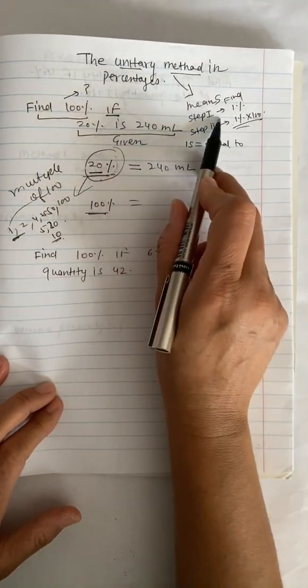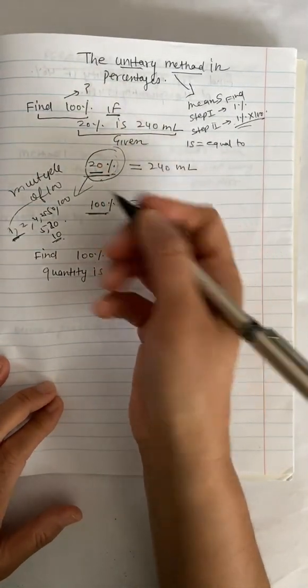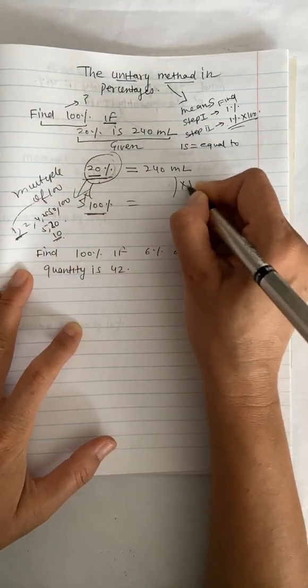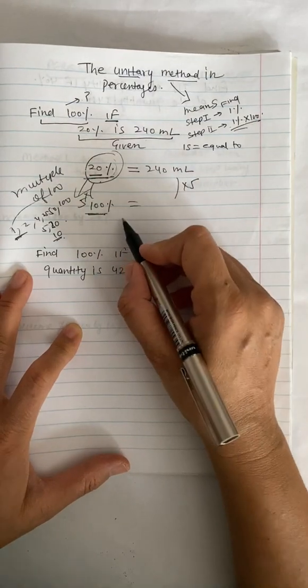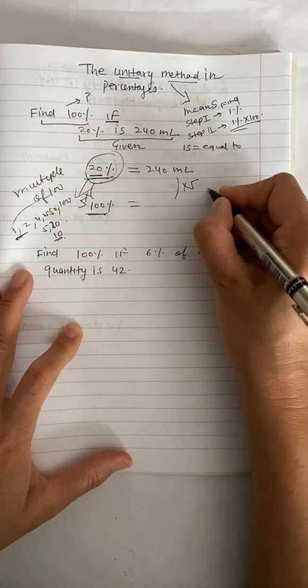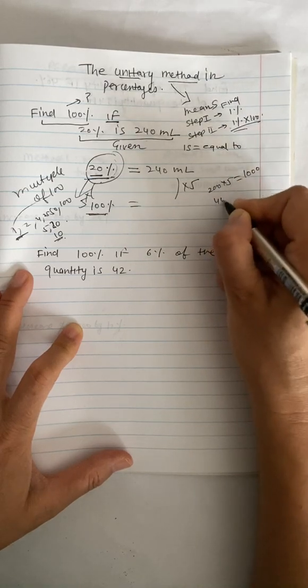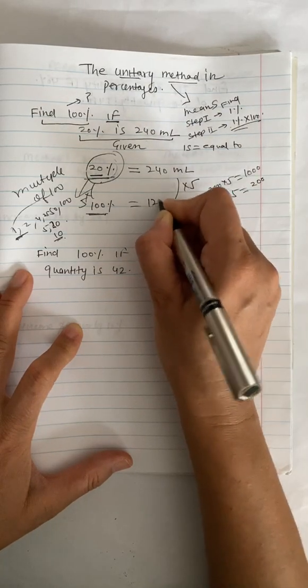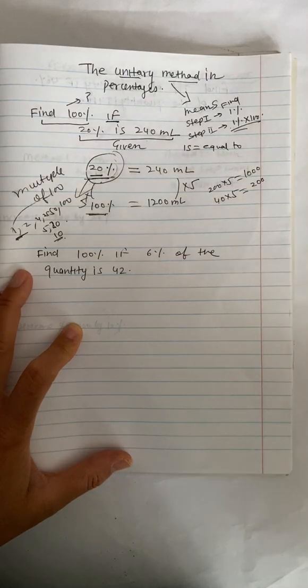We don't have to find the 1%, so we don't have to do the unitary method here. Why? Because 20 times 5, when I multiply this by 5 and this by 5, this is going to give me 100% easily. 240 multiplied by 5, so 200 multiplied by 5 is 1,000, and then 40 multiplied by 5 is 200, so that's 1,200 milliliters. I can find this very easily.